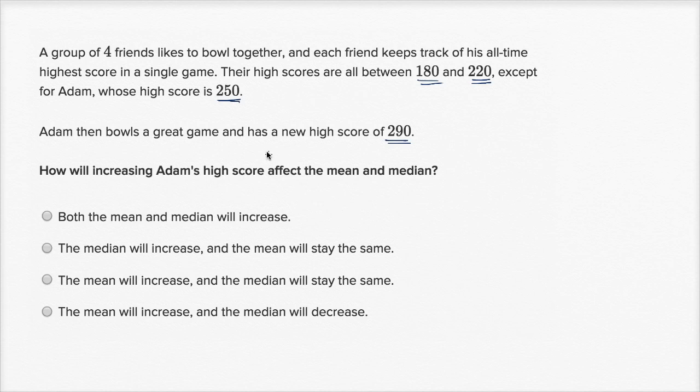Alright, so let's just think about what they're saying. We have four friends, and they each keep track of their all-time high score. So we're gonna have four data points, an all-time high score for each of the friends. This is the lowest score, this is the second lowest, second to highest, and this is the highest scoring of the friends.